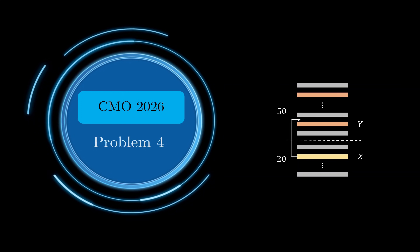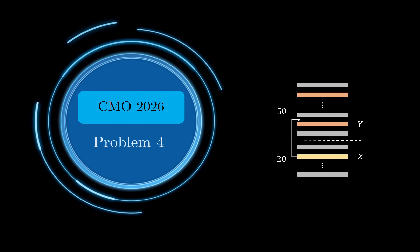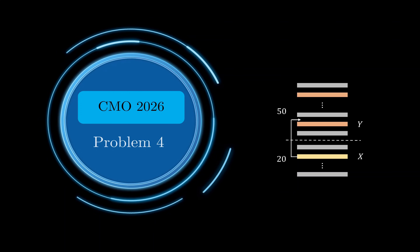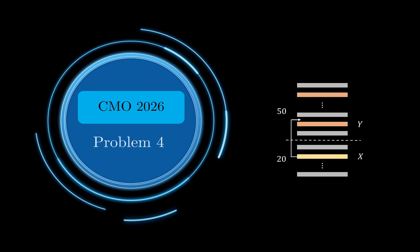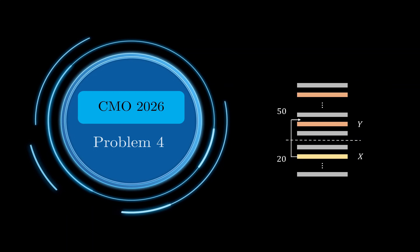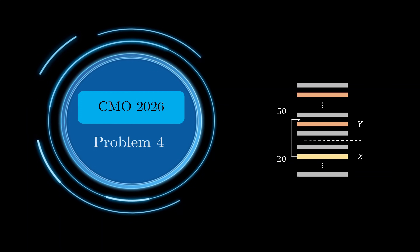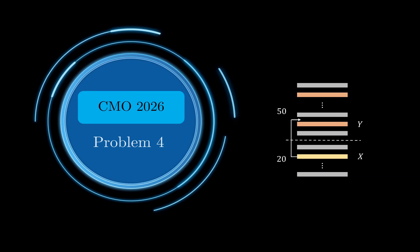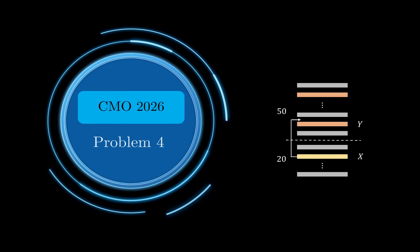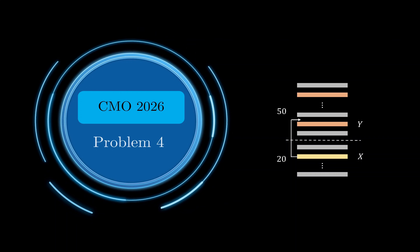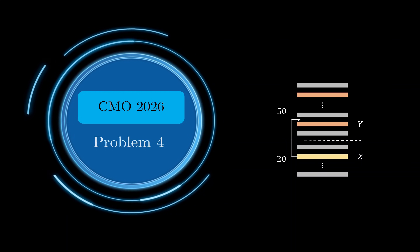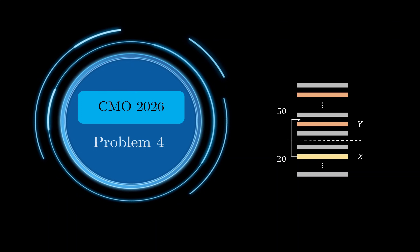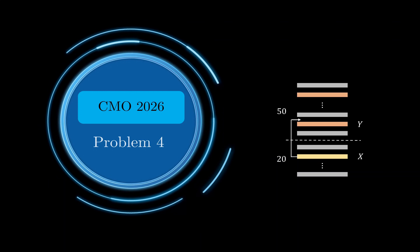Hello everyone, welcome back to Dakin Cards. Today we'll be taking a look at a problem from the China Math Olympiad, which just took place on the 26th and 27th of November. This Olympiad is one of the hardest national Olympiads out there and it's used to select the China national team for the next year, hence the name CMO2026. Problem number 4 is a combinatorics problem and, while it doesn't involve complicated mathematics, it is a good test of your ability to reason through abstract situations.